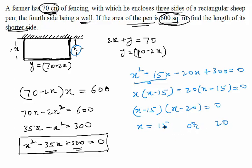So now if x is equal to 15, what is the value of y? y should be equal to 70 minus 2x, which means 70 minus 30, which is equal to 40. So y is equal to 40.